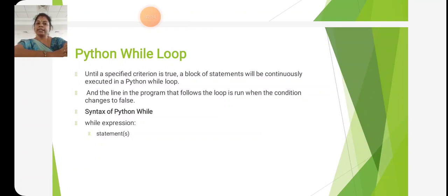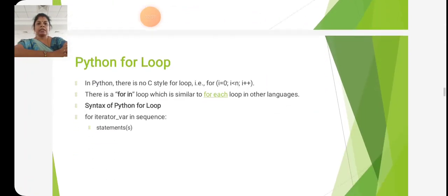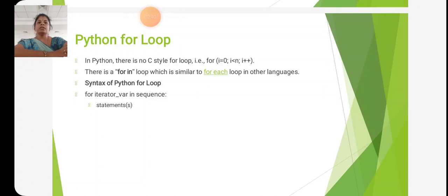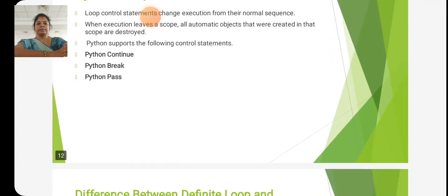Python for loop: there is no C-style for loop, that is for i=0, i<n, i++. The for loop in Python is similar to a for-each loop in other languages.